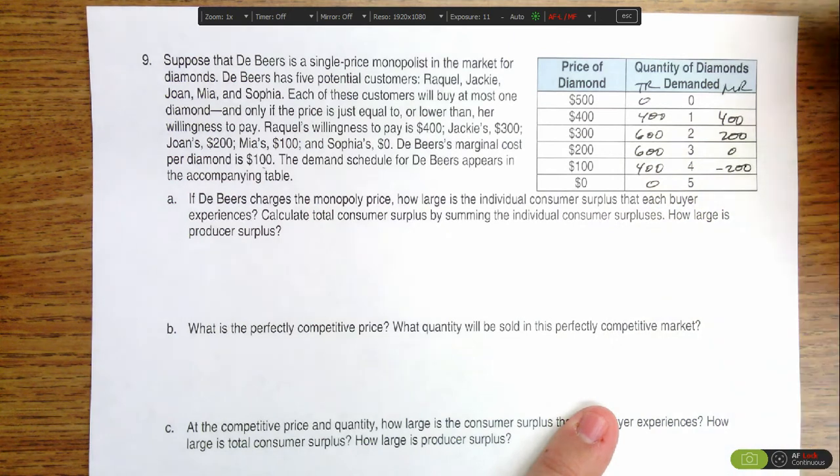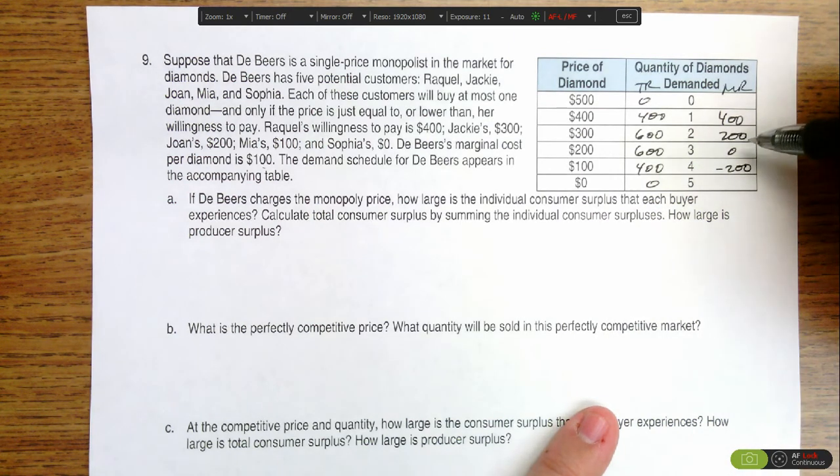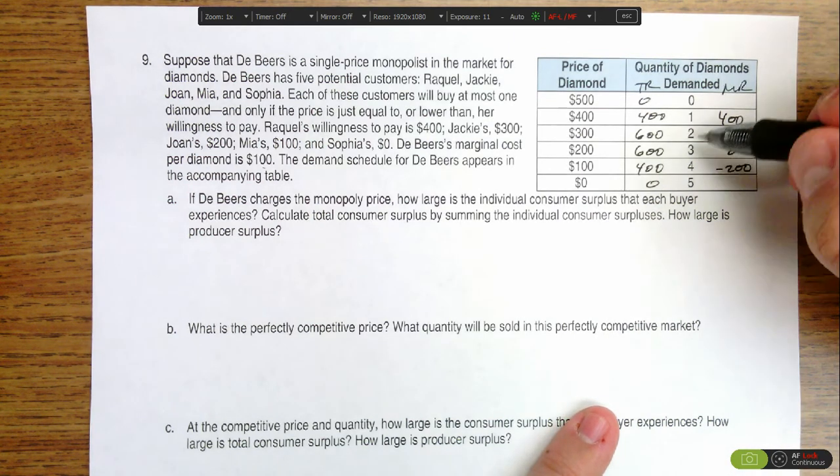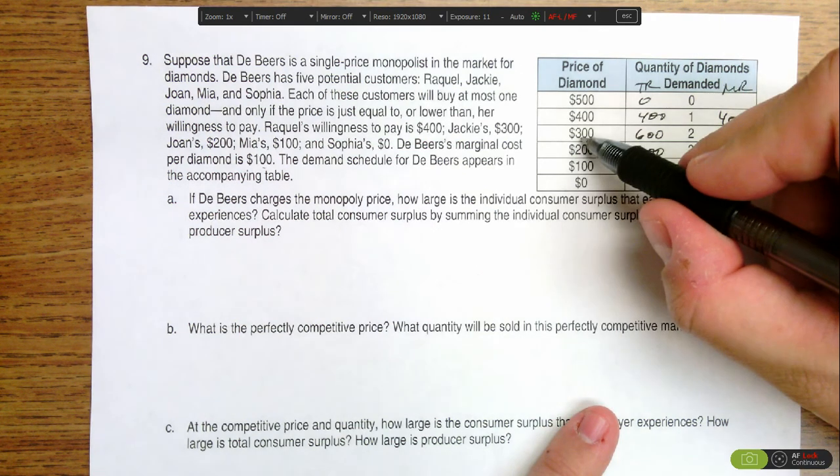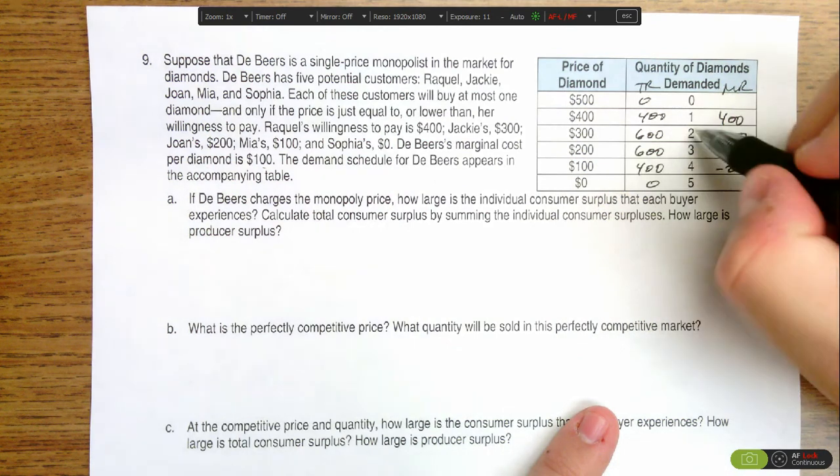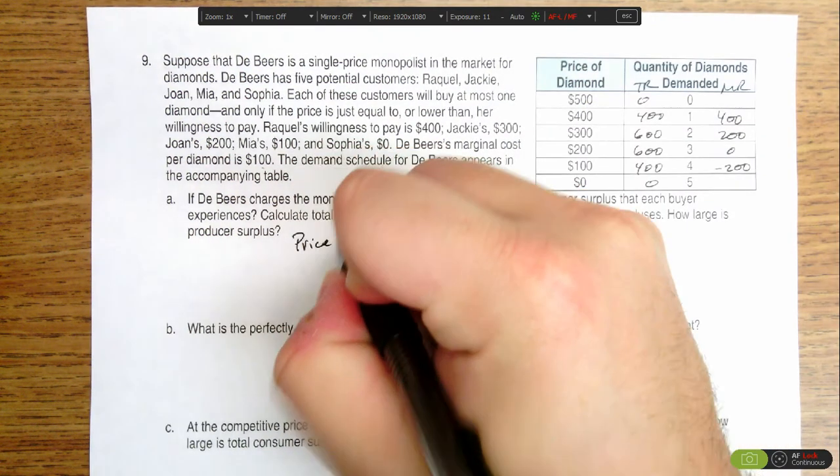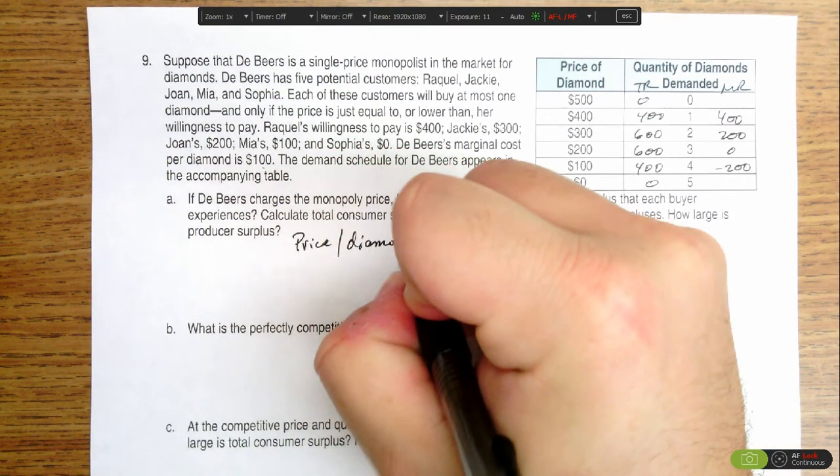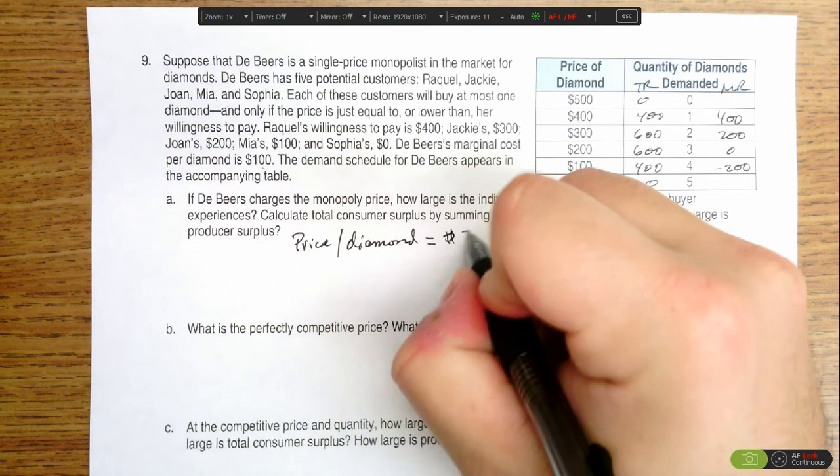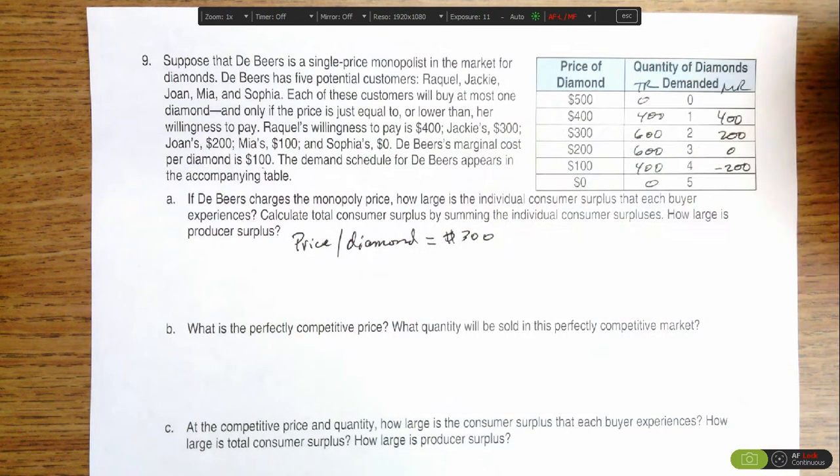So knowing that marginal cost is $100, the last place where marginal revenue is greater than or equal to marginal cost is at two diamonds. So the price that De Beers will charge is $300 because we go to the demand price for that quantity. So the price per diamond is equal to $300. Two are being sold.